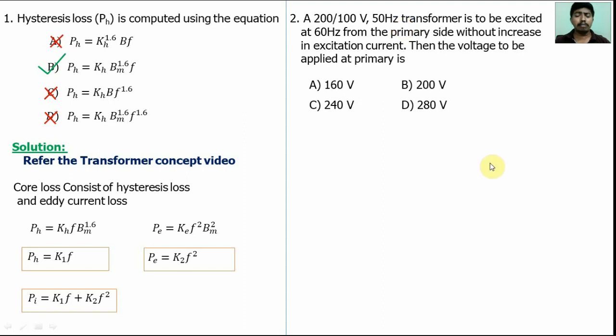Already we discussed the concepts. We know that the transformer primary voltage V1 = 4.44 f φ1max N1, where N1 is the number of turns, φ1max is maximum flux generated in the primary side, f is the frequency, and V1 is the input primary voltage.